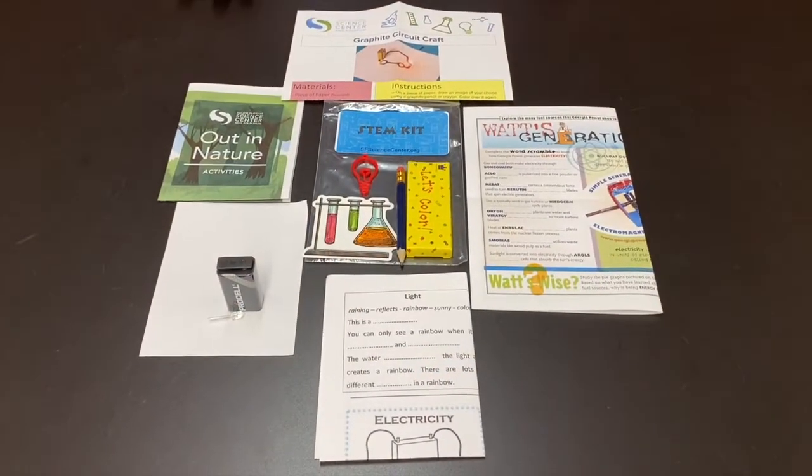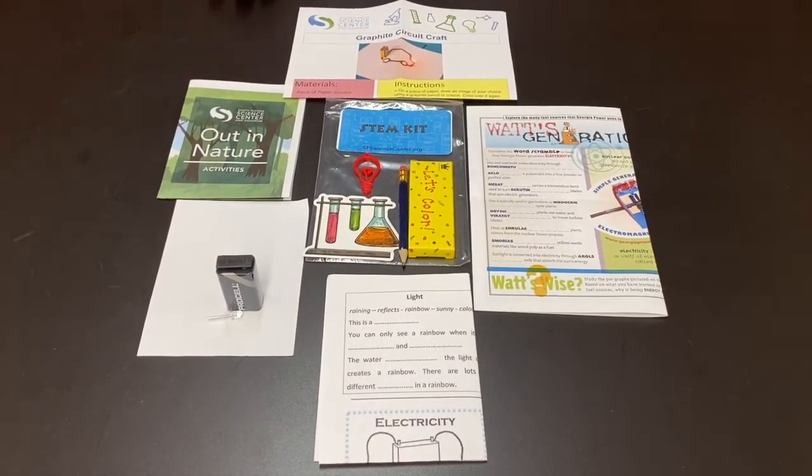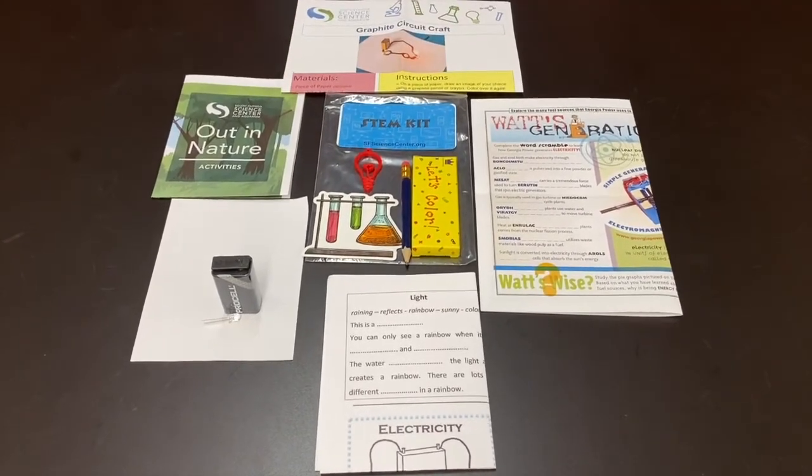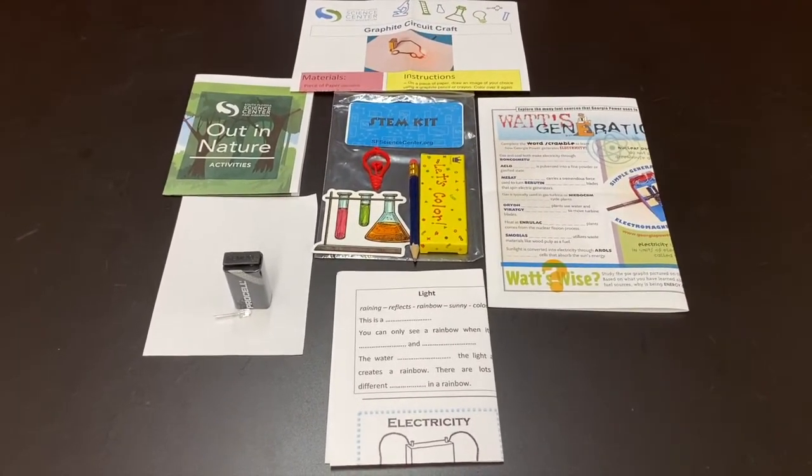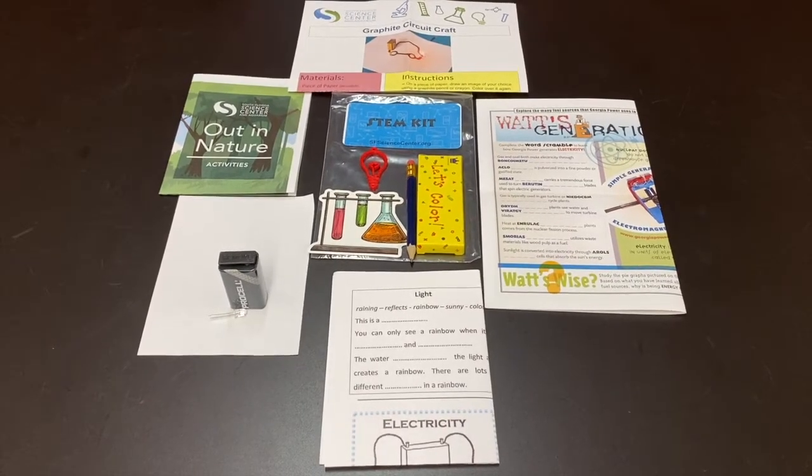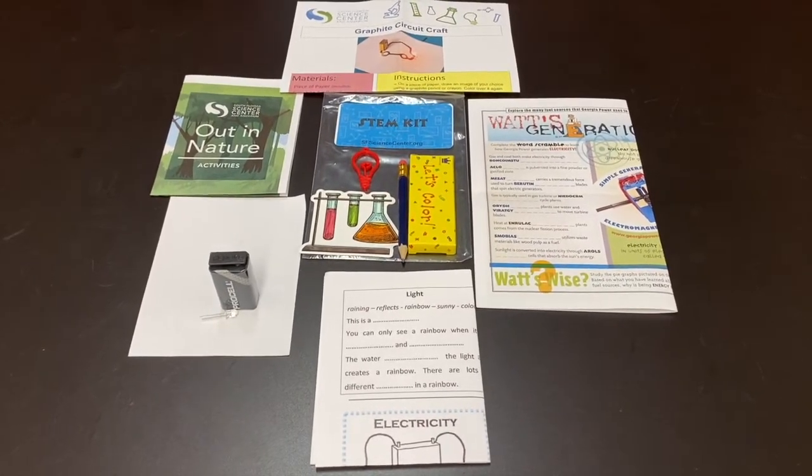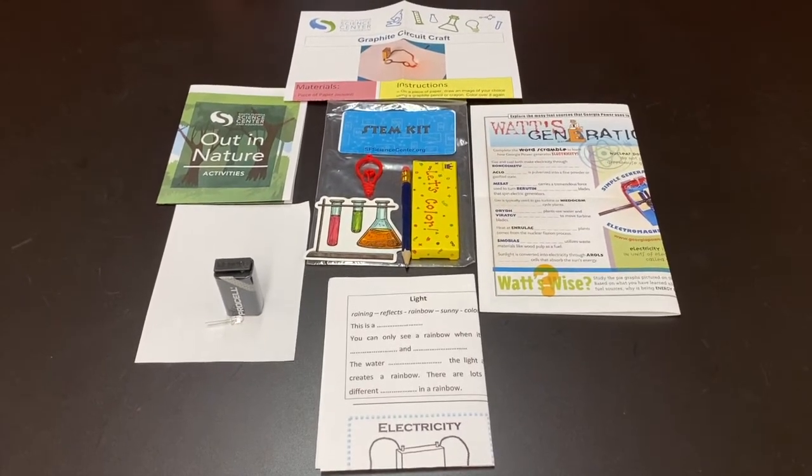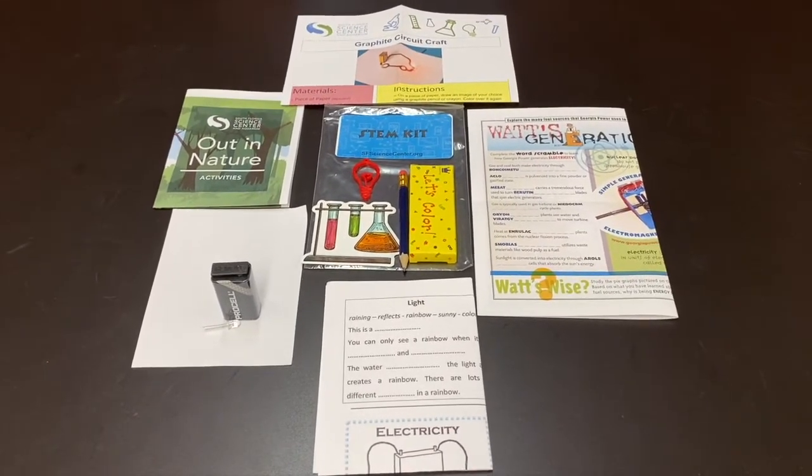So let's see what we've got in our kit today. This STEM kit's featured activity is going to be the Graphite Circuit Craft, and what we're going to be using is a little pencil that comes in here. You guys are going to actually be able to make a circuit that's going to light up a little LED just by using a graphite pencil—things that you can actually find in your house to make something really cool. So enough talking about the kit, let's go ahead and actually do the craft.